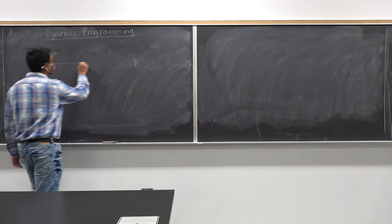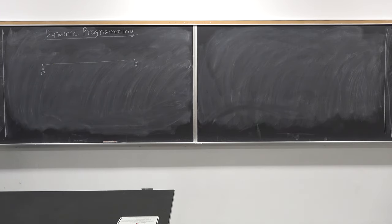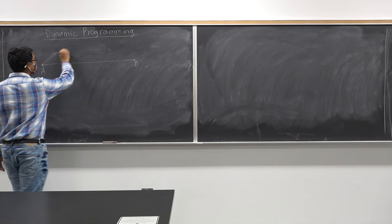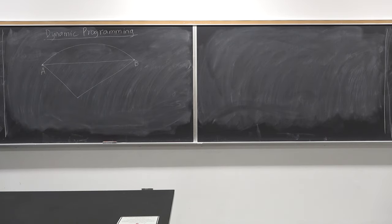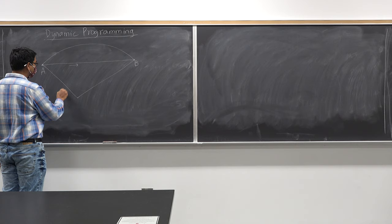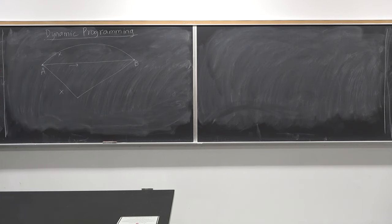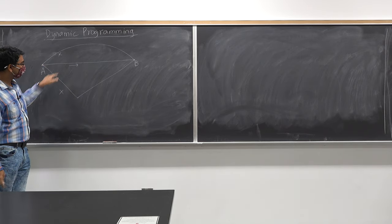So this is the shortest distance. Let's look at alternate paths from A to B — I can take this path, I can take that path. I can take multiple paths to go from A to B. What is very special about this straight-line path that is not special about these other two curved paths? Some property satisfied by the straight-line path.